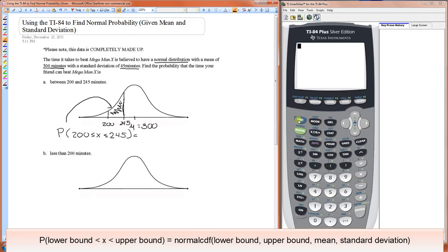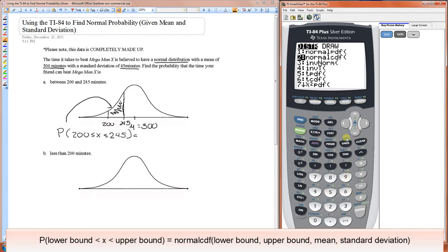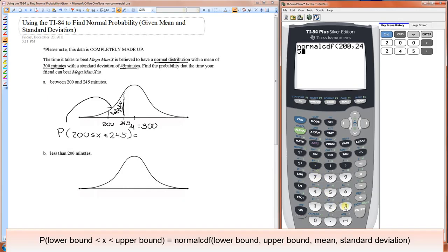All you have to do is go to the normal CDF function, which is under the distribution function in your calculator, or distribution menu. So you just do normal CDF, and you need four items in here. The first thing you put is the lower bound, which in this case is 200. Then you put the upper bound, which is 245. Then you put the mean, which is 300, and then you put the standard deviation, which is 45.